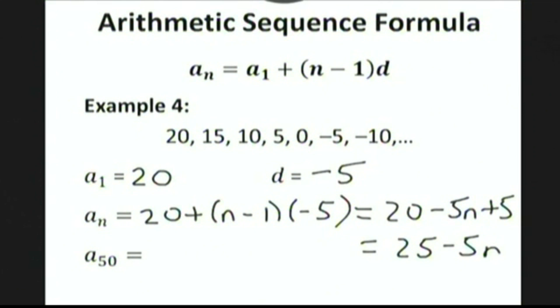So for example, if we want to compute the 50th term of this sequence, we can now just plug the number 50 into this formula to get 25 minus 5 times 50, and simply type that into our calculator to get negative 225.